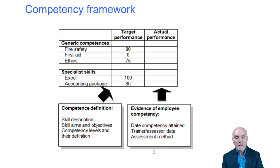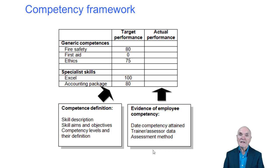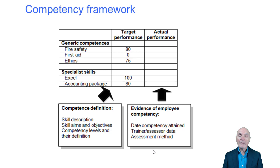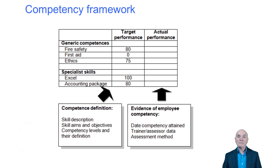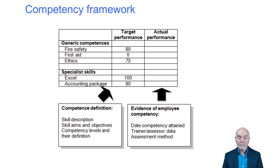For example, we might have certain generic competences such as fire safety, first aid, and ethics, and then some very specific competences like how good you are at using Excel and how good you are at using the accounting package. The target performance here indicates that this person has no role in first aid — that's being handled by others — but needs very high ability in Excel and reasonable ability in the accounting package.